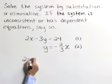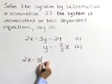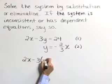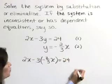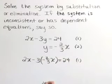So equation 1 becomes 2x minus 3 times, in place of y, negative 2 thirds x is equal to 24. That was equation 1.